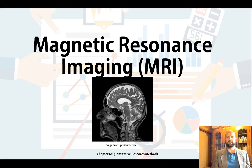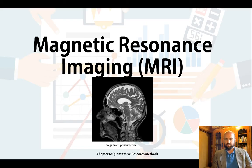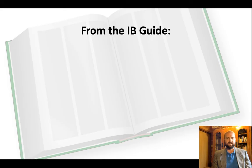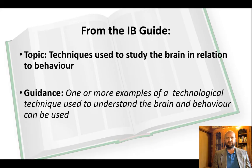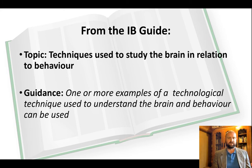In the IB psychology course you need to know about techniques to study the brain, and one of those techniques is magnetic resonance imaging — MRI. In this video I'm going to explain how and why MRI is used to study the brain in psychology. But let's first look at the IB guide: the topic is techniques used to study the brain in relation to behavior. The guidance says we can use one or more examples of a technological technique, so MRI and fMRI are good examples.